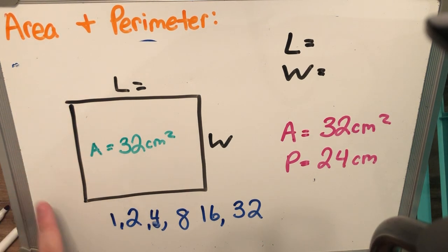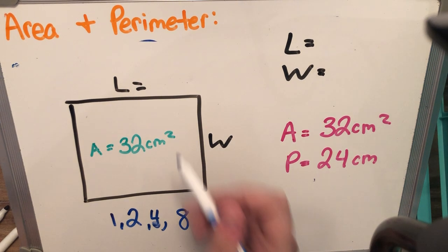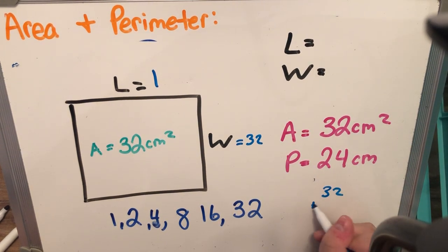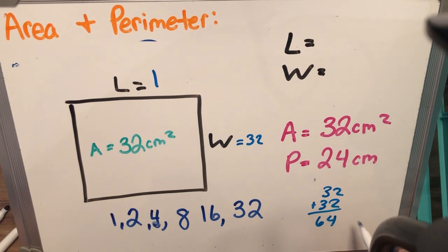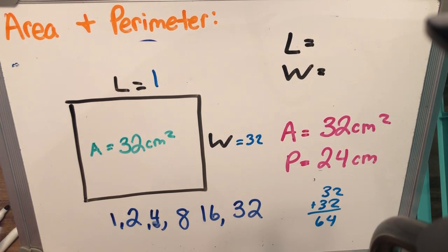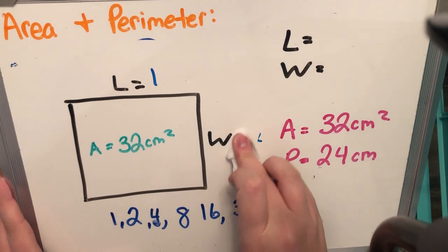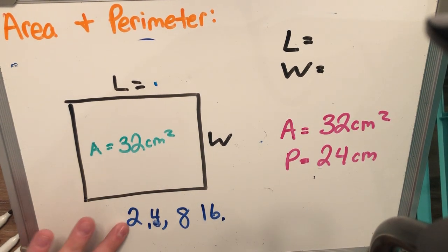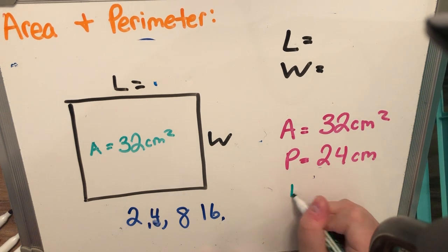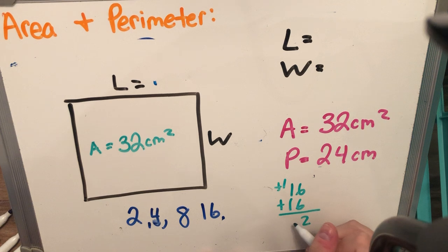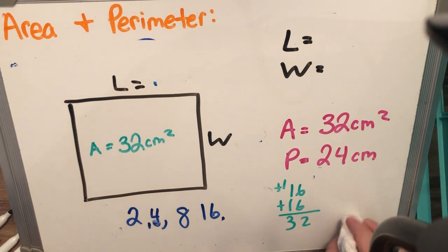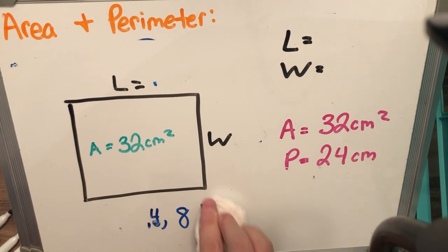Once you get your factors down, it's just a matter of adding around — guess and check. Let's say the length is one and the width is 32. Well, 32 plus 32 gives me 64 — that's way bigger than the perimeter already, just adding the two widths. So the length and width cannot be 1 and 32. Now I'm left with 2 and 16. Let's see: 16 plus 16 is 32 — it matches the area, but not the perimeter. So 2 and 16 cannot be my length and width either.